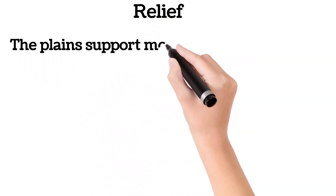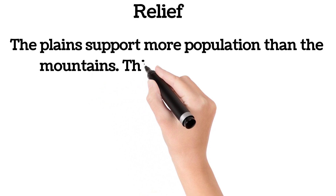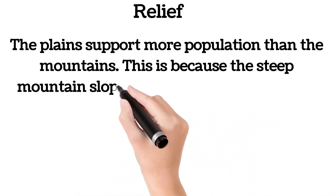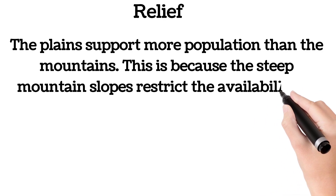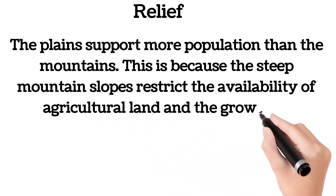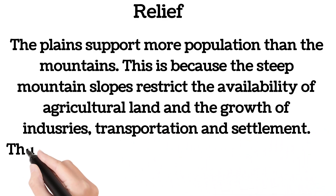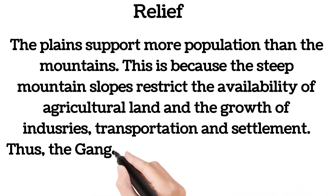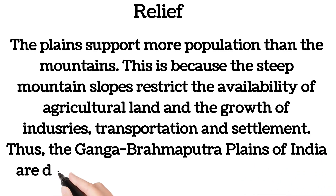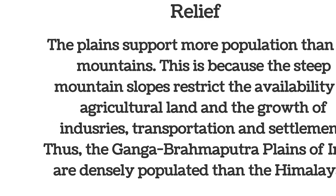Relief: plains support more population than the mountains because the steep mountain slopes restrict the availability of agricultural land and the growth of industries, transportation, and settlements. Thus the Ganga-Brahmaputra plains of India are more densely populated than the Himalayas.